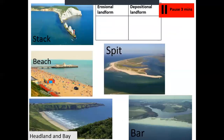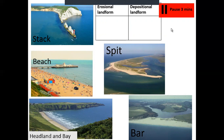Using what we've just learned, you've got five landforms here: stacks, a beach, headland and bay, a bar — which is a spit of sand — and a spit. Draw a quick table with two columns: erosional landform and depositional landform, and put them in the correct column. Remember, for an erosional landform, the rock or sediment has been taken away; for a depositional landform, sand or sediment has been dropped to create it. Pause the video and off you go — three minutes.